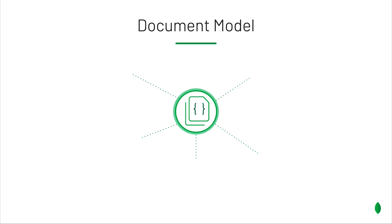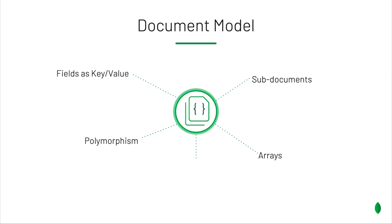Document databases are based on the document model. We can summarize the document model by the following five attributes: data is represented as key values; polymorphism allows documents with different shapes to coexist side by side; sub-documents and arrays support relationships between entities; and a representation that is easy to process and read. The format is called BSON, which is very similar to JSON.